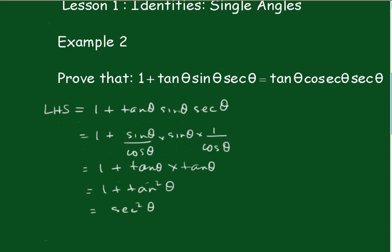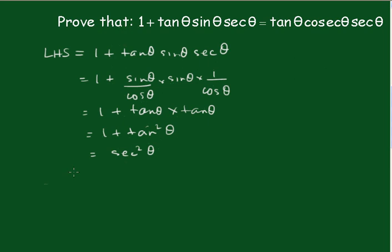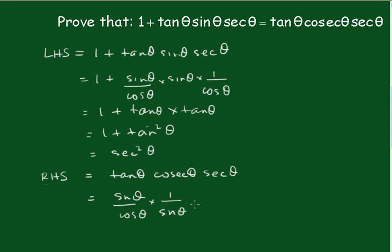Now working from the right hand side, RHS = tanθcosecθsecθ. Change that into sinθ/cosθ, times cosecθ is 1/sinθ, and secθ is 1/cosθ.